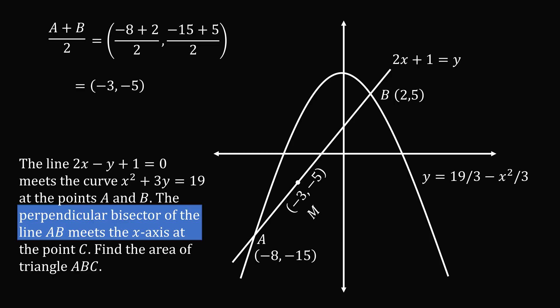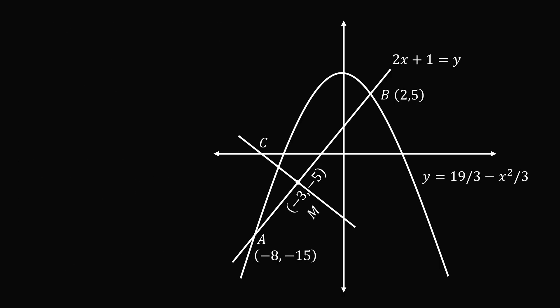Now we need the perpendicular bisector to go through point M, and it needs to be perpendicular to the line AB. Now we know that the line AB has a slope that's equal to 2. So that means the line that's perpendicular to it will have a negative reciprocal. So this slope will be negative 1 over 2. Now we also know that we go through the point negative 3 comma negative 5.